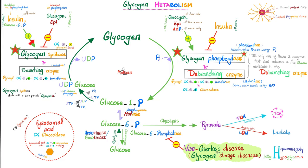In the feeding state, insulin approves: glucose converts to glucose-6-phosphate via hexokinase or glucokinase, then to glucose-1-phosphate via phosphoglucomutase — the phosphate jumping from carbon 6 to carbon 1. Through many steps involving glycogen synthase and branching enzyme, we get glycogen. In the fasting state, epinephrine and glucagon activate glycogen phosphorylase and de-branching enzyme. Glycogen becomes glucose-1-phosphate, then glucose-6-phosphate via the same mutase, and finally free glucose via glucose-6-phosphatase.